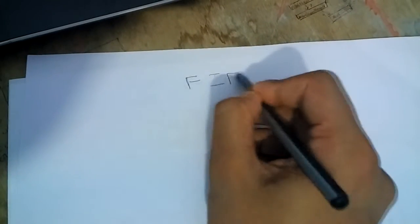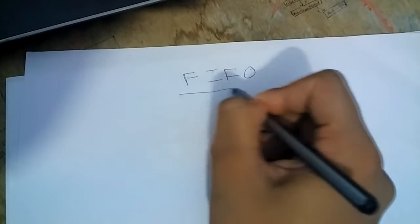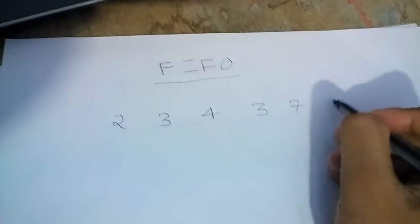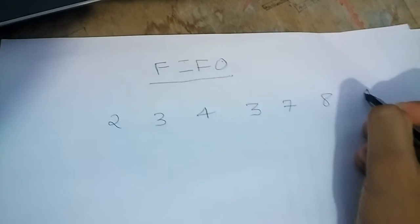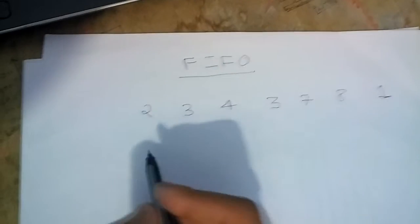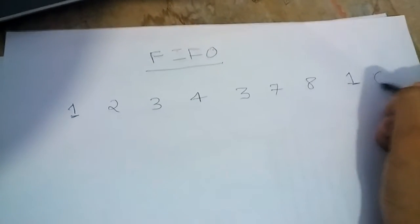So let's discuss first in first out scheduling algorithm. Let's take some numbers: 2, 3, 4, 3, 7, 8, and 1. Let's make some more numbers here. I put one here more time and 6 here.